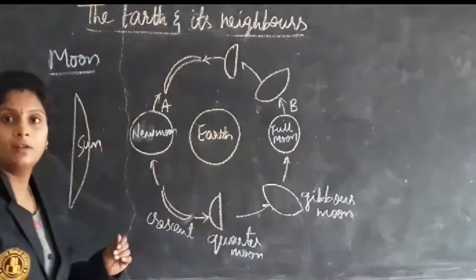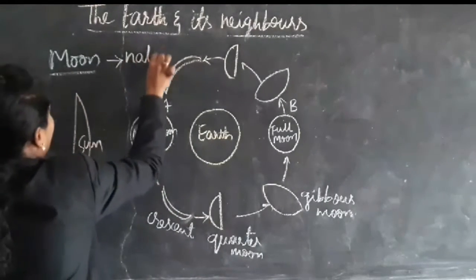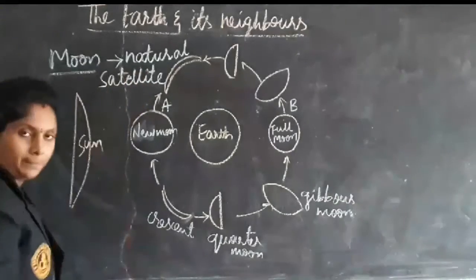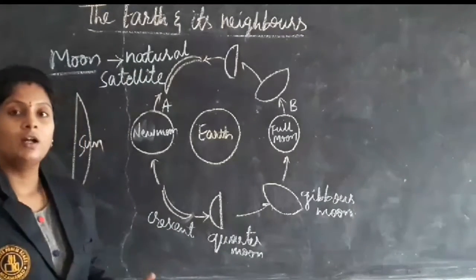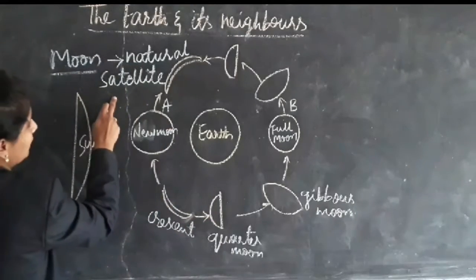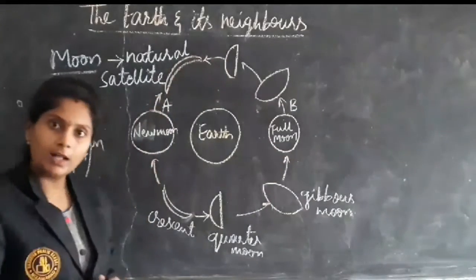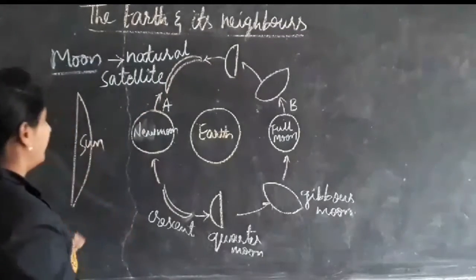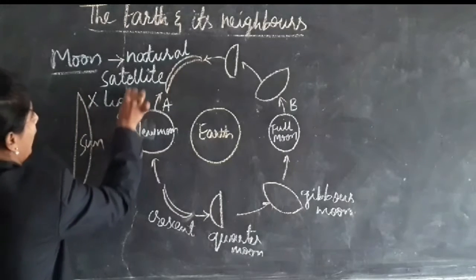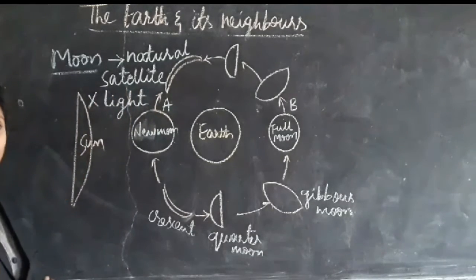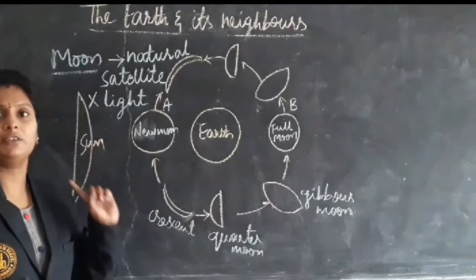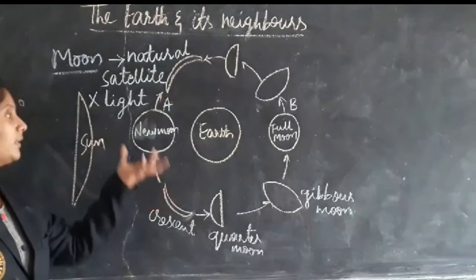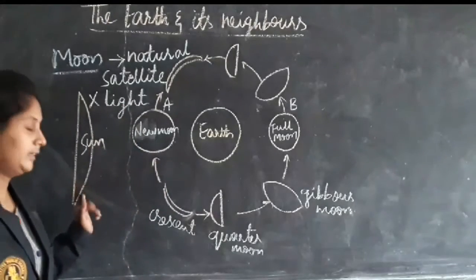Next one is moon. Moon is the natural satellite of earth because it moves around the earth. Moon does not have its own light. Whatever the moon we are seeing from the earth appears to be shining, but it does not have its own light — it takes the light of the sun.